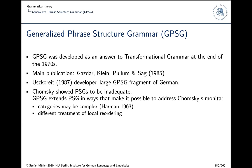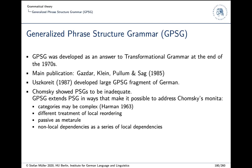GPSG suggested a different treatment of local reordering. In GB, items were moved to other positions in the tree; GPSG handles this differently. They introduced an interesting new tool called meta-rules, which map a certain set of rules onto other rules. There was also an interesting treatment of non-local dependencies as a series of local dependencies. We will look at all of these innovations in what follows.